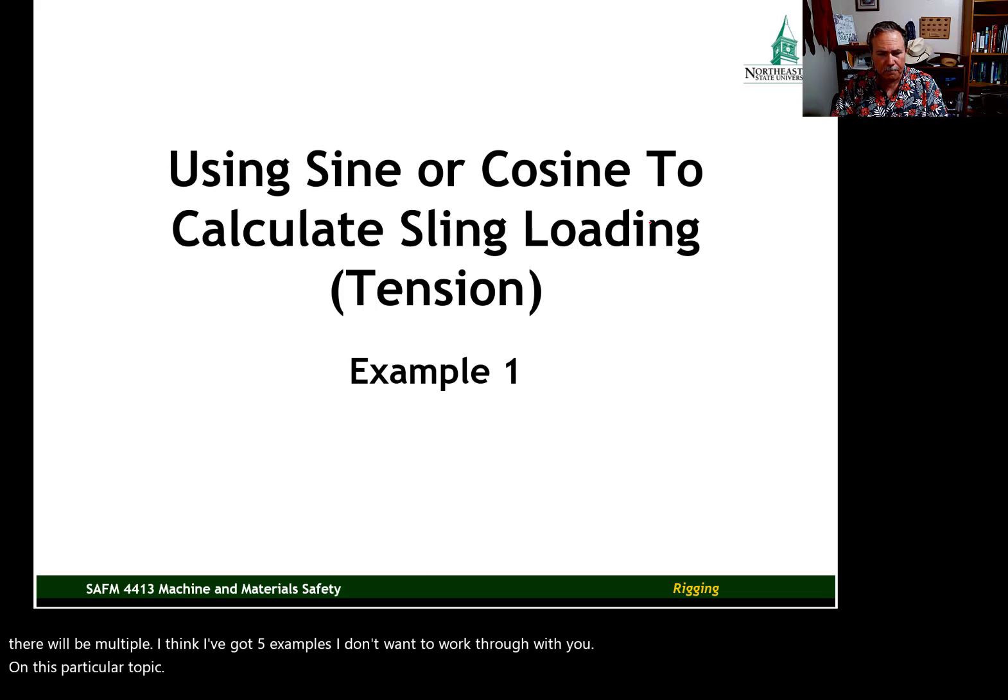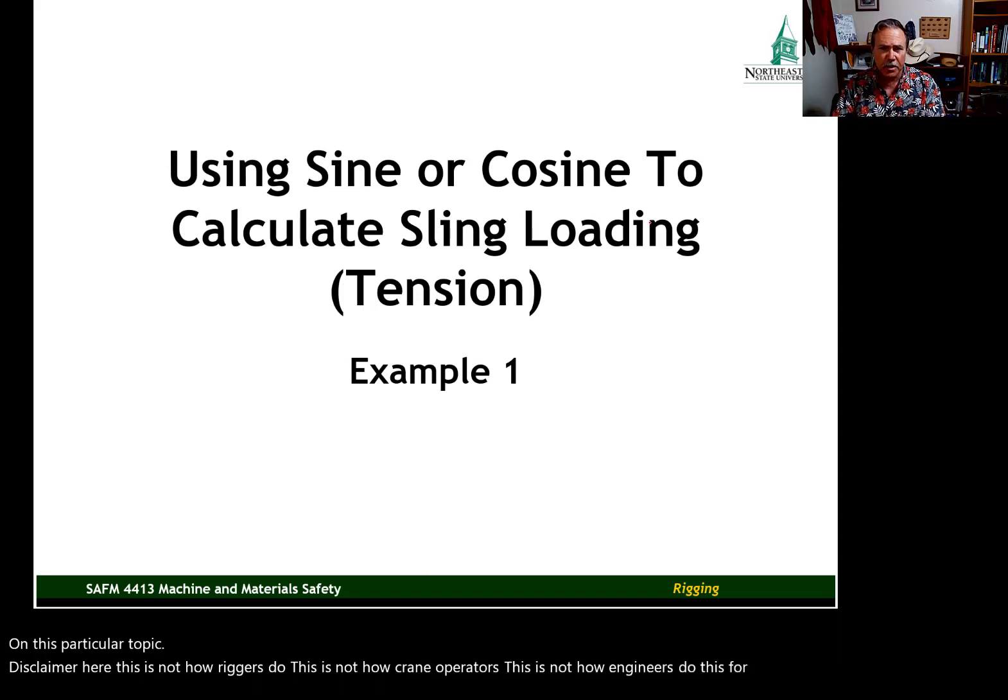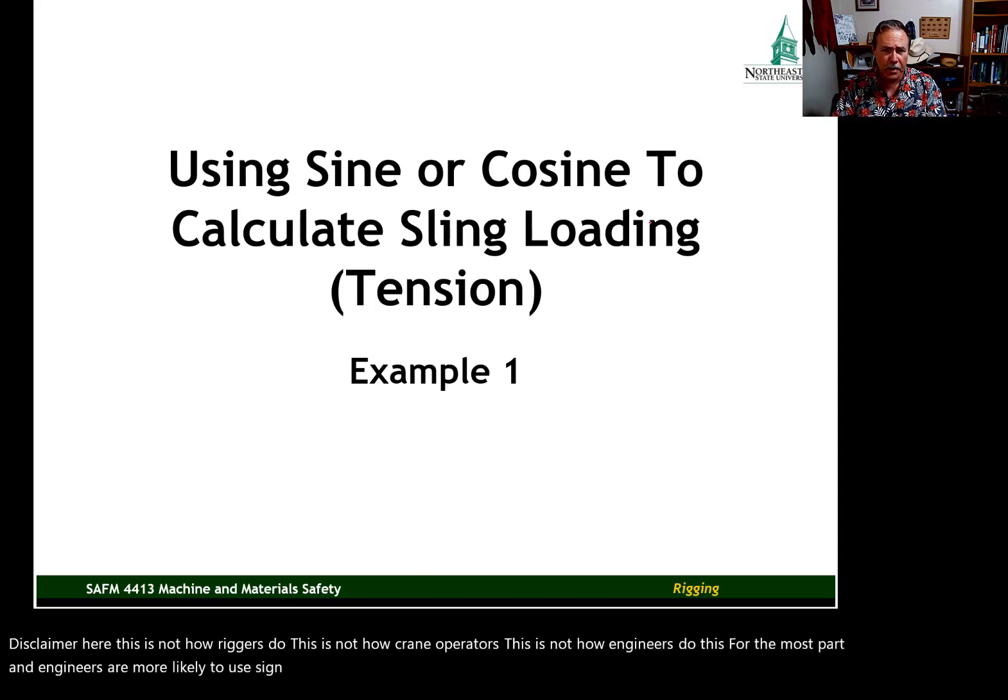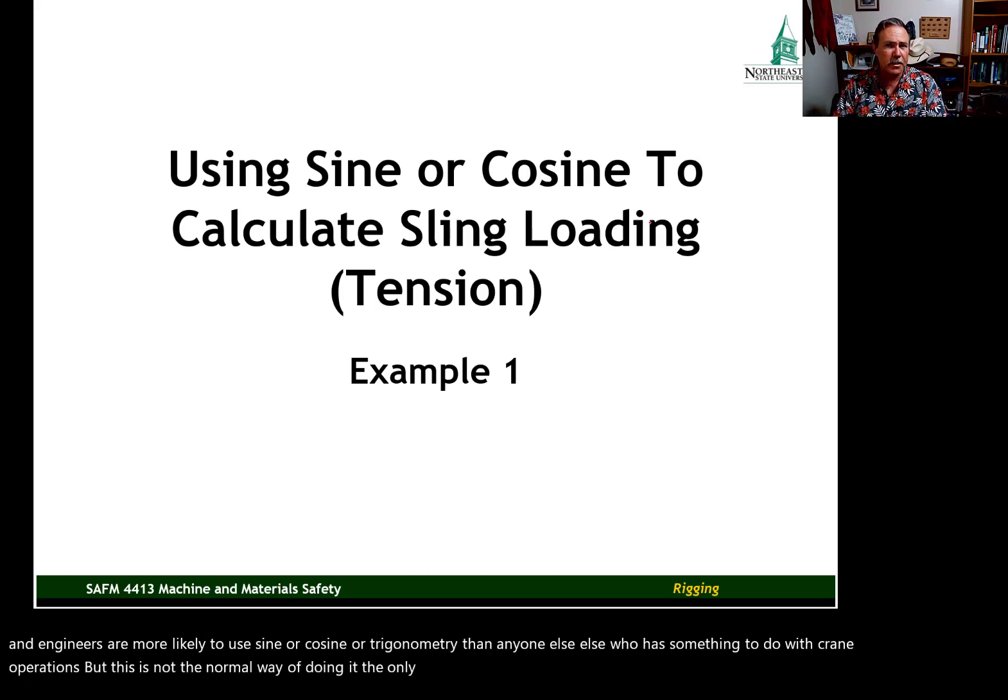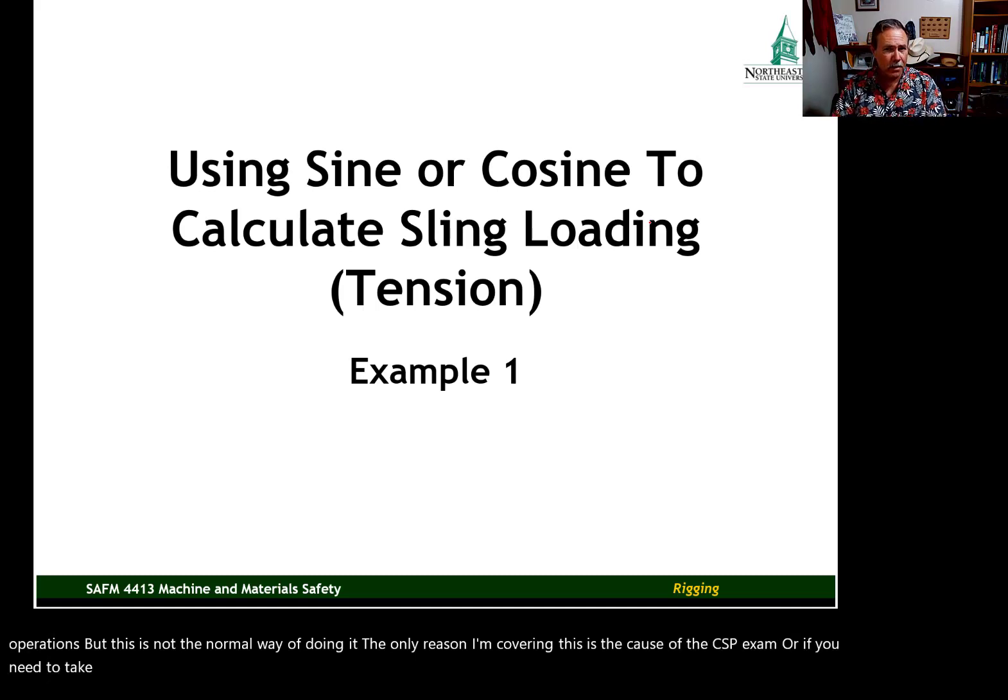Disclaimer here. This is not how riggers do this. This is not how crane operators or engineers do this, for the most part. Engineers are more likely to use sine or cosine or trigonometry than anyone else who has something to do with crane operations. But this is not the normal way of doing it. The only reason I'm covering this is because of the CSP exam, or if you need to take the ASP exam. The types of problems that I'm going to show you are very common on those exams. The BCSP wants to test your ability to use basic trigonometry.